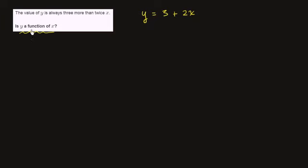Whenever you're asked whether something is a function of something else, you're really just saying for any input x, does it map to exactly one y? So if we say y is a function of x, for any x that you input into this function, you must get exactly one y.